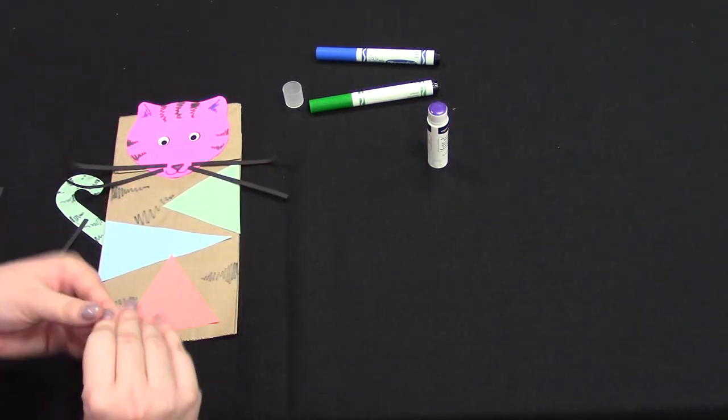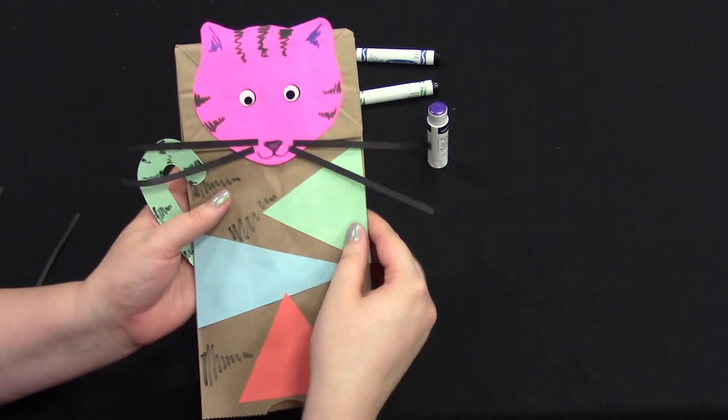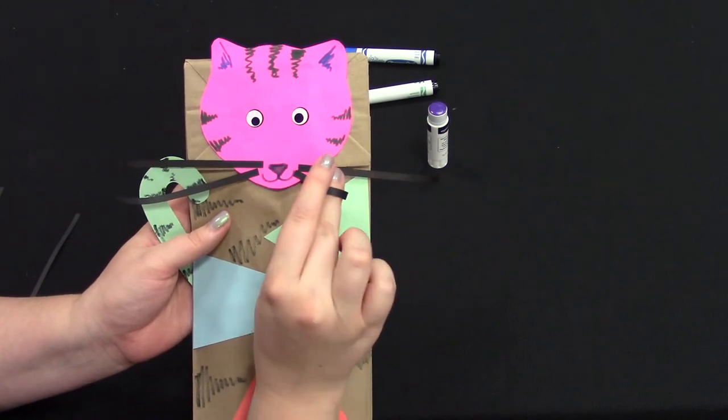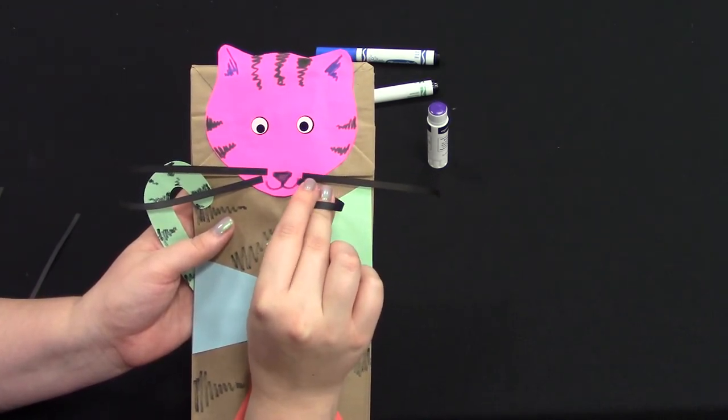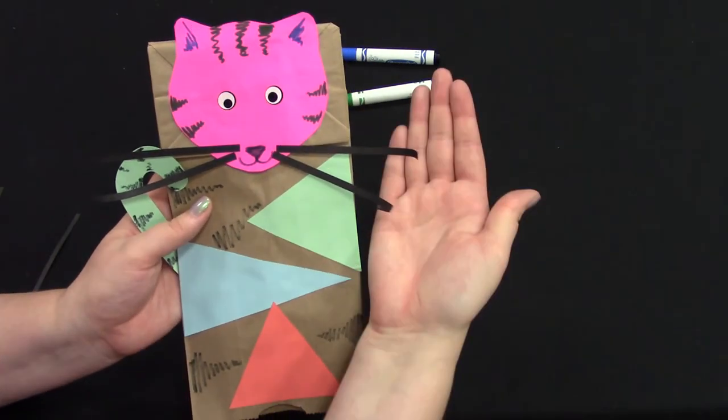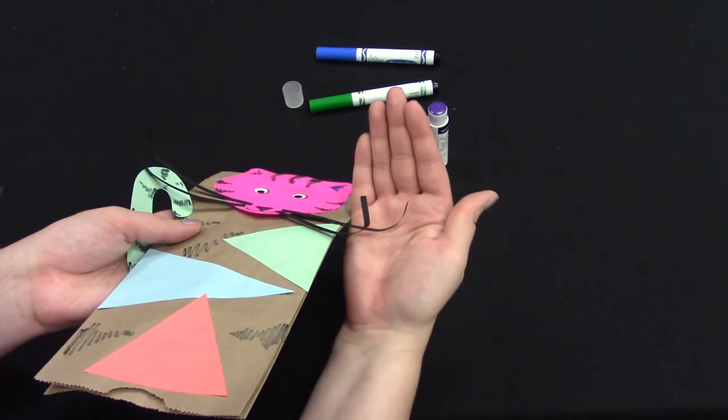If you want to curl your whiskers too, all you have to do is loop the end right around your finger and gently pull it. Hold it for a few seconds. And you can't really see it from that angle, but it's curly.